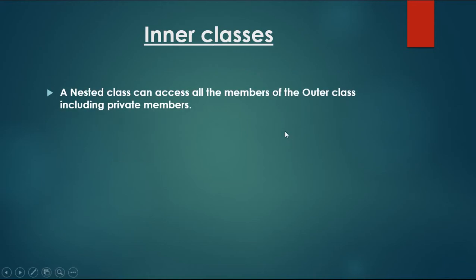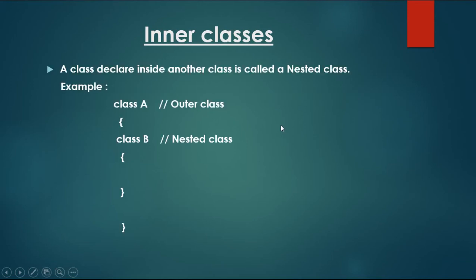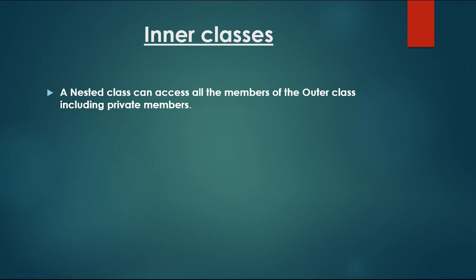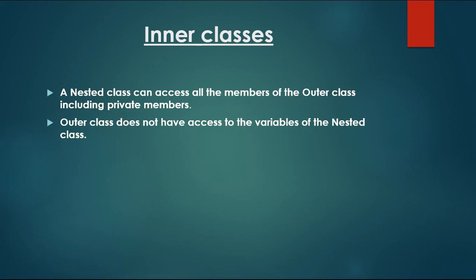A nested class can access all the members of the outer class including private members. So in the previous example, class B can access all the members of class A including private members of class A. But the outer class does not have access to the variables of the nested class.